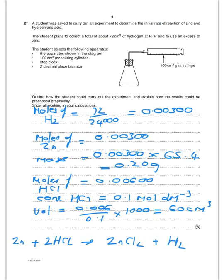So how can we carry out this experiment and process the results graphically? So I've done the mole calculations here for you. So first of all, I need to collect 72cm cubed of hydrogen. So that is 0.003 moles of hydrogen. Moles of zinc will be the same.